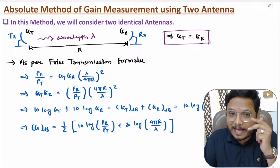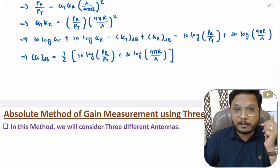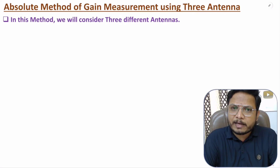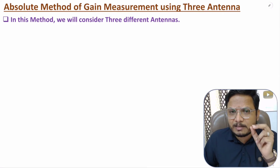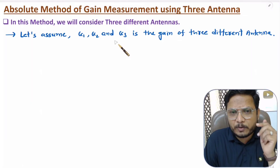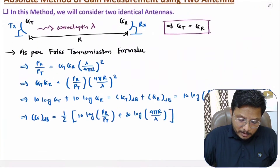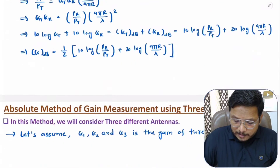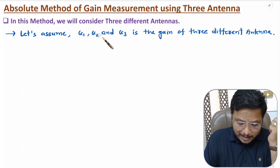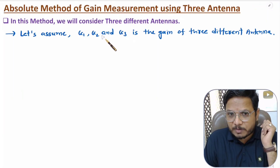Now the second method: absolute method of gain measurement using three antennas. Here we use three antennas with gains G1, G2, and G3. We take pairs of antennas for measurement. First antenna 1 and antenna 2, then antenna 1 and antenna 3, then antenna 2 and antenna 3. With these three combinations we write three Friis transmission equations.